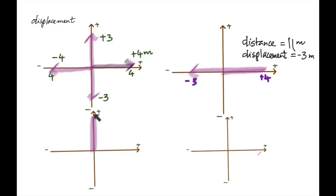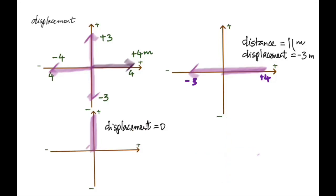If I throw something up from here, it goes up to a certain height and comes back — what's the displacement? The displacement in that case is zero. If an object returns to its initial position, its displacement is always zero.